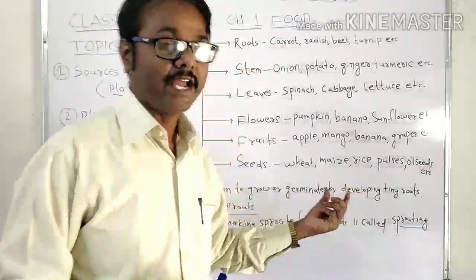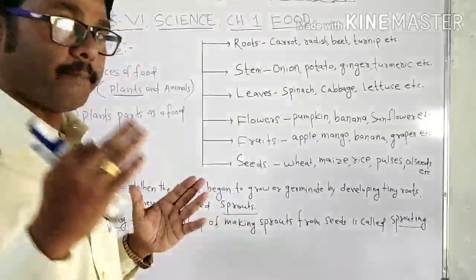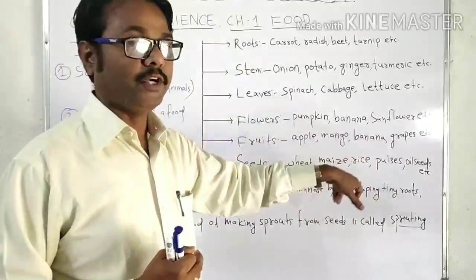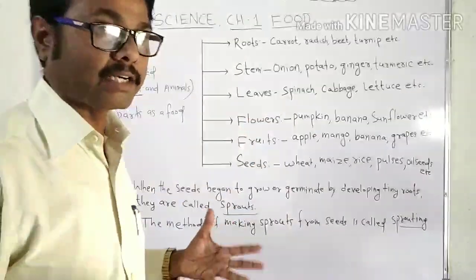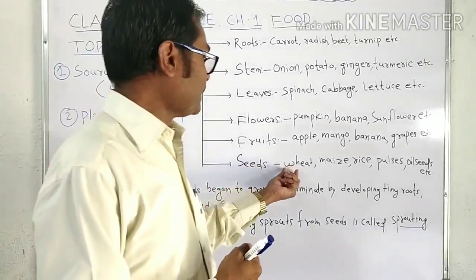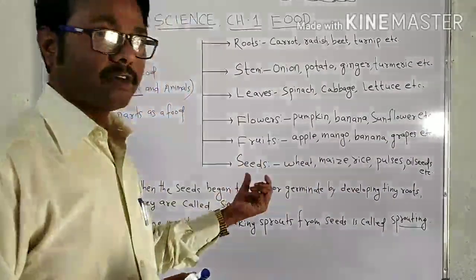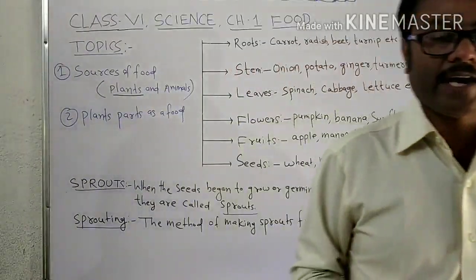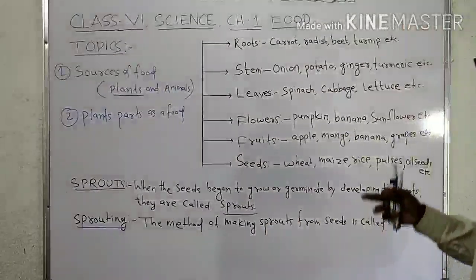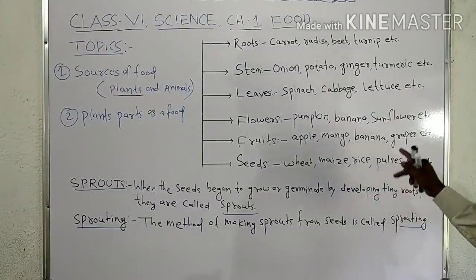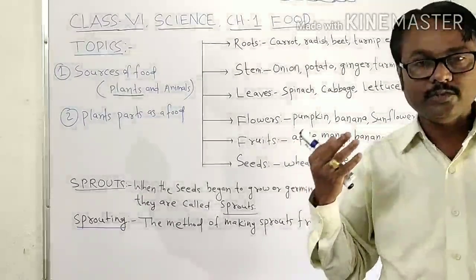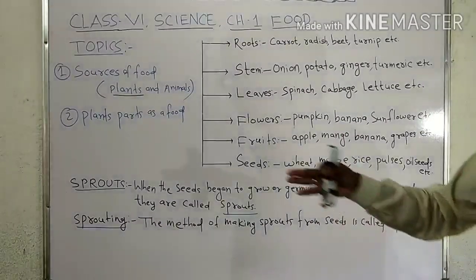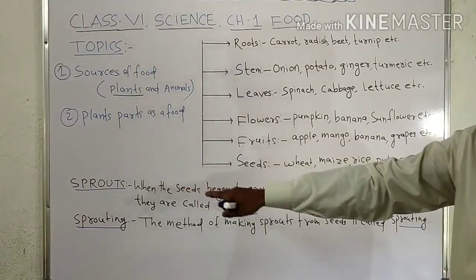Wheat and rice are very important seeds — half of our food coming from plants is either wheat or rice, either directly or as wheat and rice products. Oil seeds are also important: mustard oil and groundnut oil come from the seed part of the plant, and we use these in cooking food.